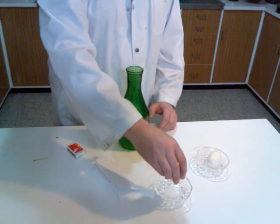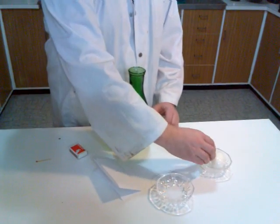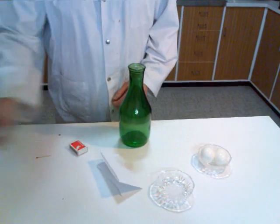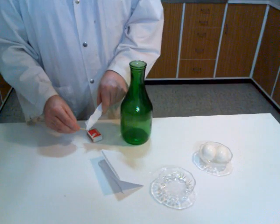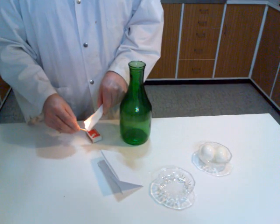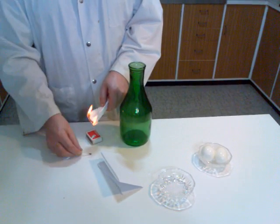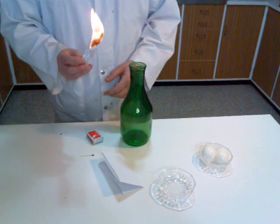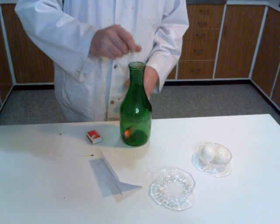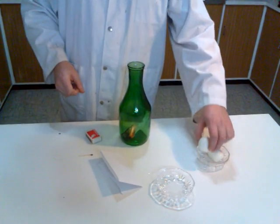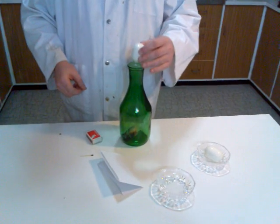A little bit of water on the egg, and we will light some paper. We are about to place this inside the bottle and place the egg on top.